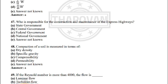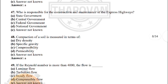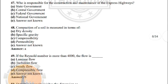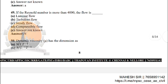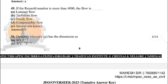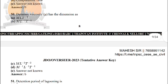Next: compaction of soil is measured in terms of — the correct answer is option D: dry density. Next: if the Reynolds number is more than 4000, the flow is — the correct answer is option B: turbulent flow.